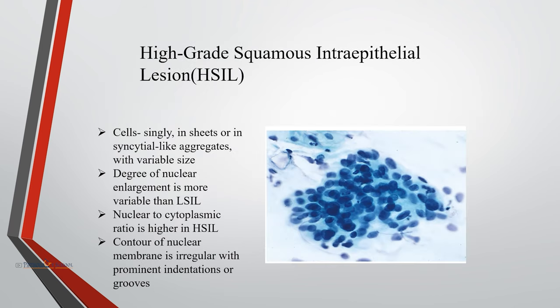In high-grade squamous intraepithelial lesion (HSIL), cells are arranged singly, in sheets, or in syncytial-like aggregates with variable size. The degree of nuclear enlargement is more variable than in LSIL. The nuclear-to-cytoplasmic ratio is higher, and the contour of the nuclear membrane is irregular with prominent indentations on groups.